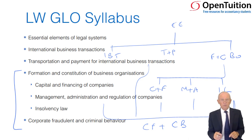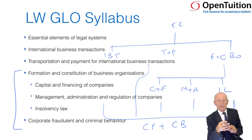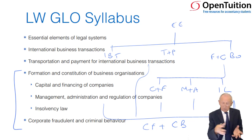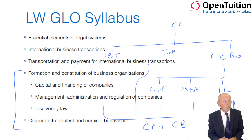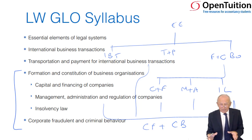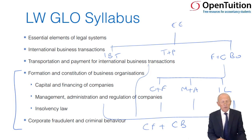Throughout and affecting each of those previously mentioned elements of the syllabus, we have the concept of illegality, fraud, corporate fraud, and criminal behaviour. We cover insider dealing, money laundering, abuse of company name, fraudulent trading, and wrongful trading. Most recently, in 2010, legislation called the Bribery Act was passed and is now within the syllabus. Corporate fraud and criminal behaviour affect every single element of this syllabus.